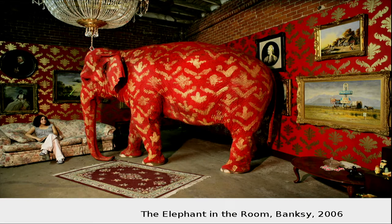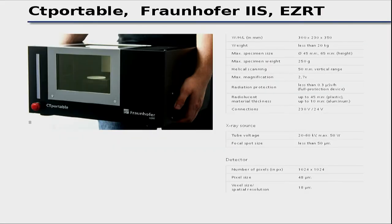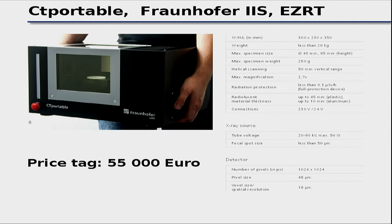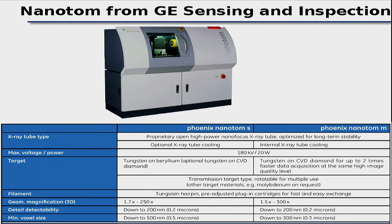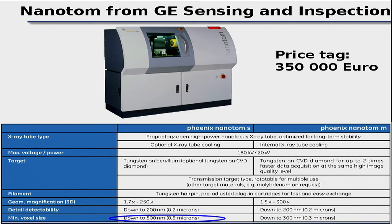Addressing the practical question of access: this is a hands-on school, yet X-ray tomography isn't truly tabletop. The Fraunhofer machine we brought costs around €55,000 and is limited to ~10 mm penetration in aluminium and ~45 mm in plastic. A higher-end instrument like the nanotome — capable of 500 nm resolution for gold lines — costs ~€350,000. Neither is truly tabletop.